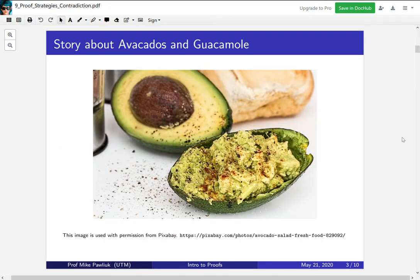I would like to start with a story about avocados and guacamole. Avocados are the vegetable you see in the top, and guacamole is a sort of mix, a dip, that's made out of avocados. This story will help us understand how proof by contradiction works.